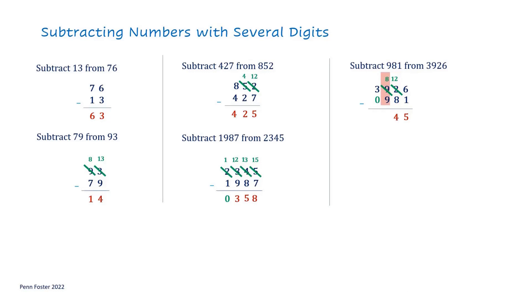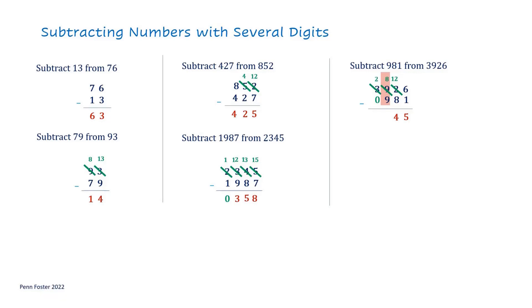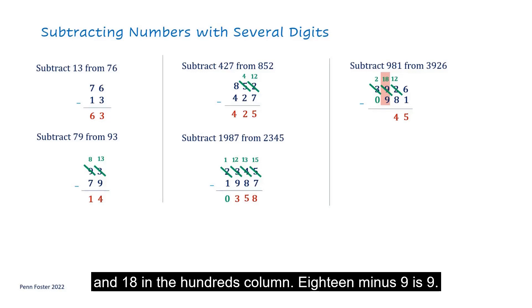Go to the next column. 8 minus 9 is not possible. Borrowing from the 1000's column results in 2 in the 1000's column and 18 in the 100's column. 18 minus 9 is 9. At last, 2 minus 0 is 2. The answer is 2,945.